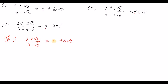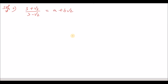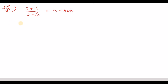We need to find the solution for a and b. The key idea is to rationalize the denominator. When the denominator is an irrational number, we rationalize it. We cannot leave an irrational number in the denominator, so we compare the rational part and the irrational part on both sides. The irrational part contains root over 2.